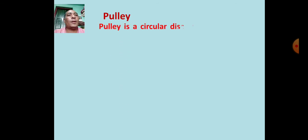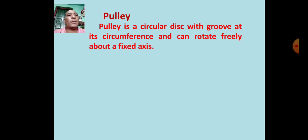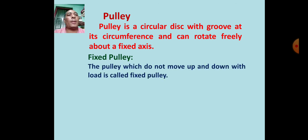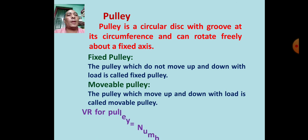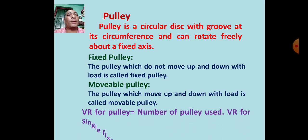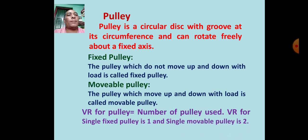A pulley is a circular disc with a groove at its circumference that can rotate freely about a fixed axis. A fixed pulley does not move up and down with load. A movable pulley moves up and down with load. Velocity ratio for a pulley equals the number of pulleys used. VR for a single fixed pulley is 1, and for a single movable pulley is 2.